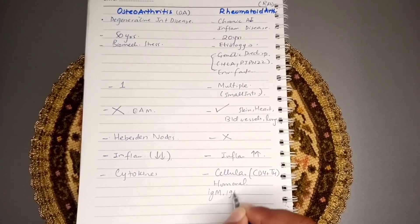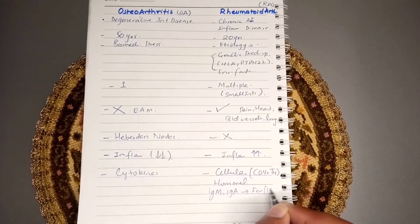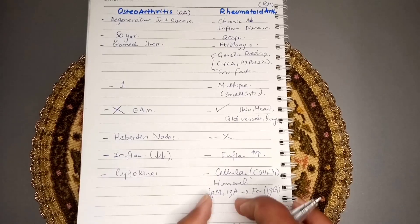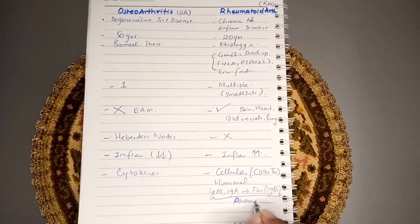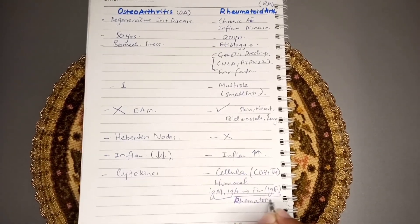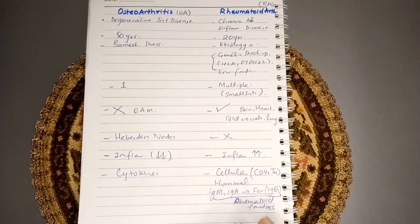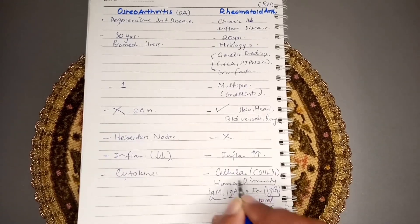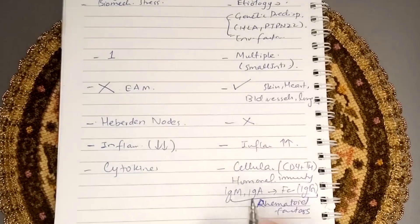IgM and IgA bind to the Fc portion of the IgG antibody, meaning they are acting against our own antibodies. These are known as rheumatoid factors. So in rheumatoid arthritis, we can see rheumatoid factors, and the disease is mediated by cellular and humoral immunity.